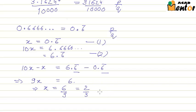Hence, we can say that 2 by 3 is the P by Q representation of 0.6666 or 0.6 bar.